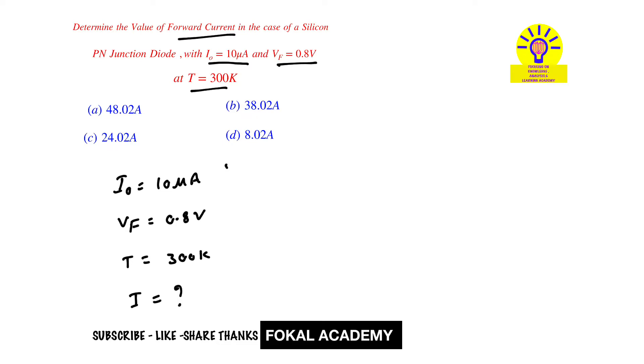Now just recall the relation between all these parameters and we have one relation that is I equal to I0 into E power V by Eta VT minus 1. So here V means forward voltage. From this formula we can get the forward current.